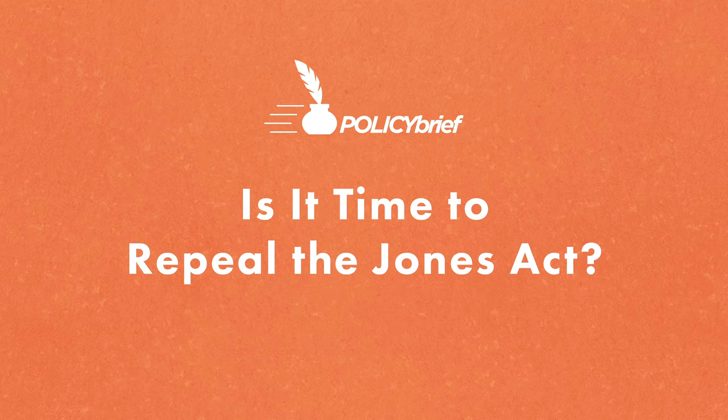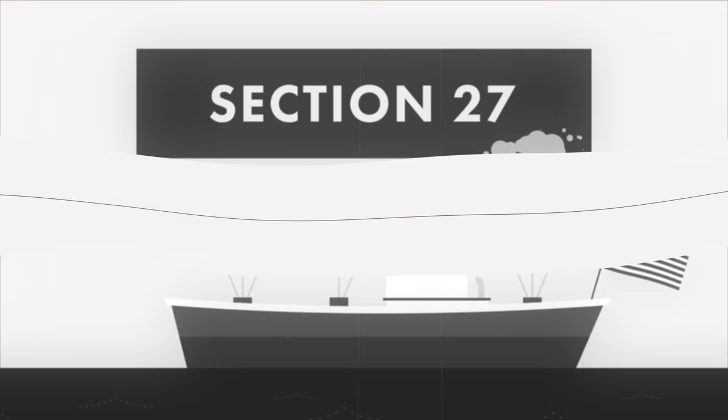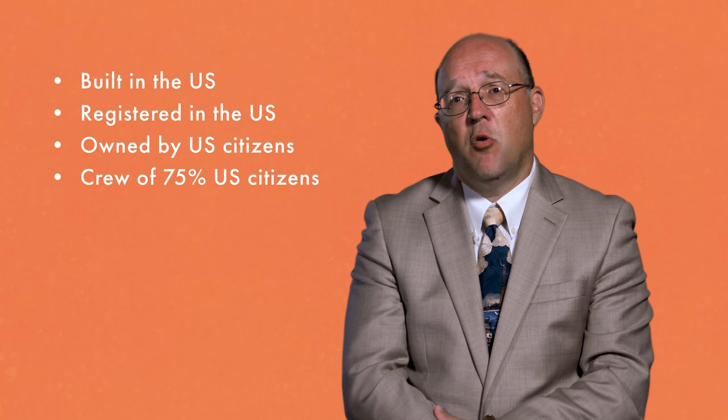The Jones Act has many sections and many provisions, but the one that's most well-known today is Section 27. Under Section 27, it requires that if you're going to move goods between two U.S. ports, the vessel that moves them has to be built in the United States, registered in the United States, owned by Americans, and at least 75 percent of the crew has to be American citizens.